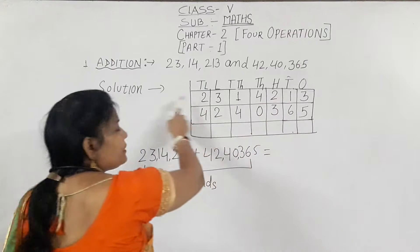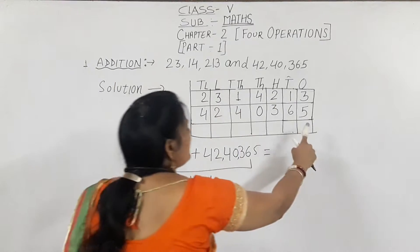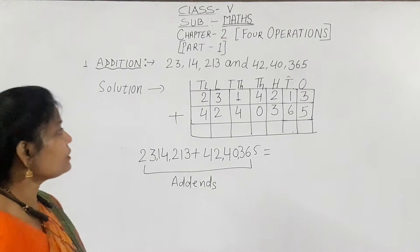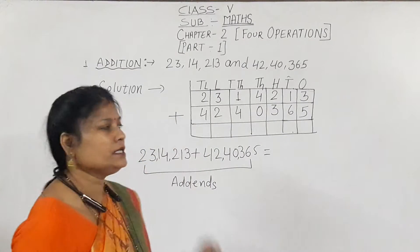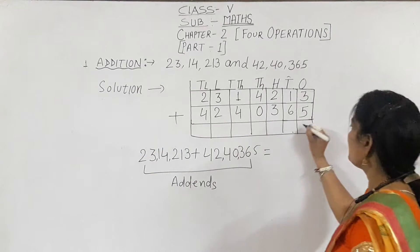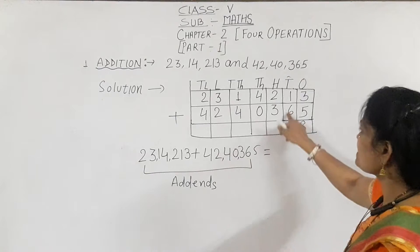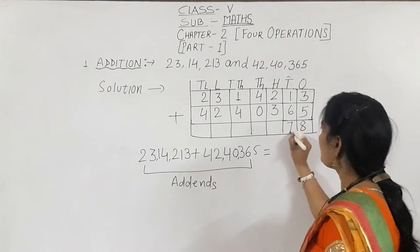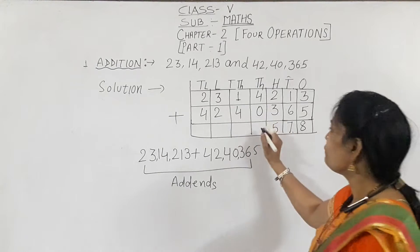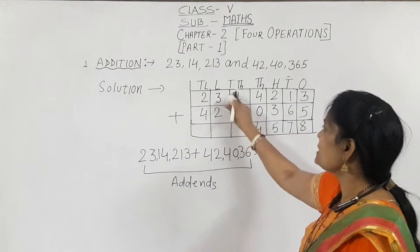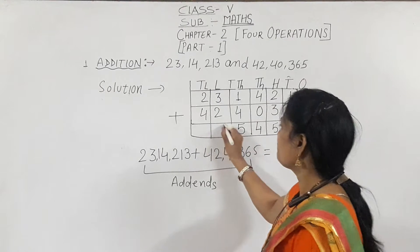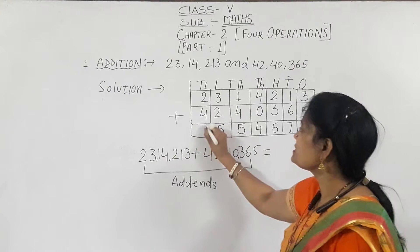We arrange from the first place going left, and the second number also from the first place going ahead. Now we do the addition: 3 plus 5 is 8, 1 plus 6 is 7, 3 plus 2 is 5, 4 plus 0 is 4, 4 plus 1 is 5, 2 plus 3 is 5, and 4 plus 2 is 6.